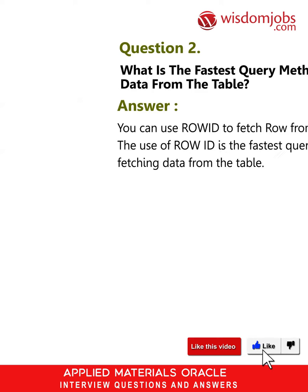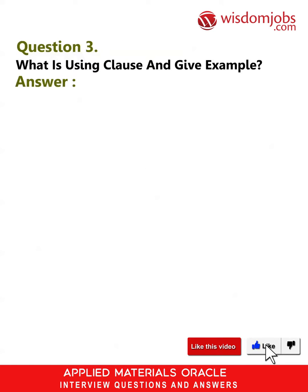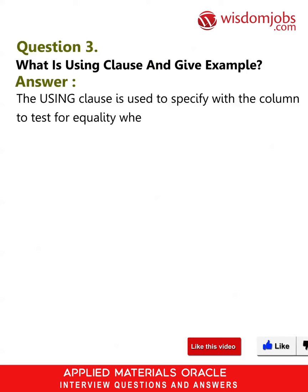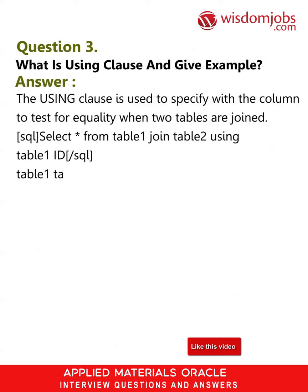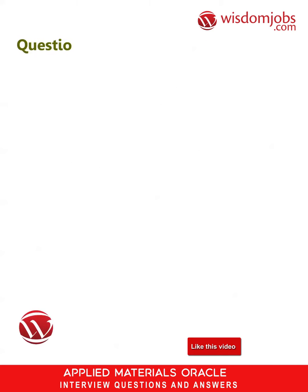Question 3: What is the USING clause and give an example. Answer: The USING clause is used to specify which column to test for equality when two tables are joined. Example: SELECT * FROM table1 JOIN table2 USING (table1_id) — table1 is joined with table2 using the specified column.